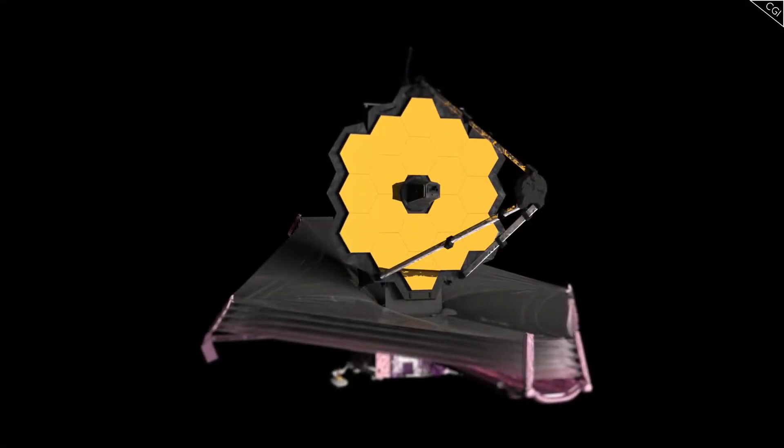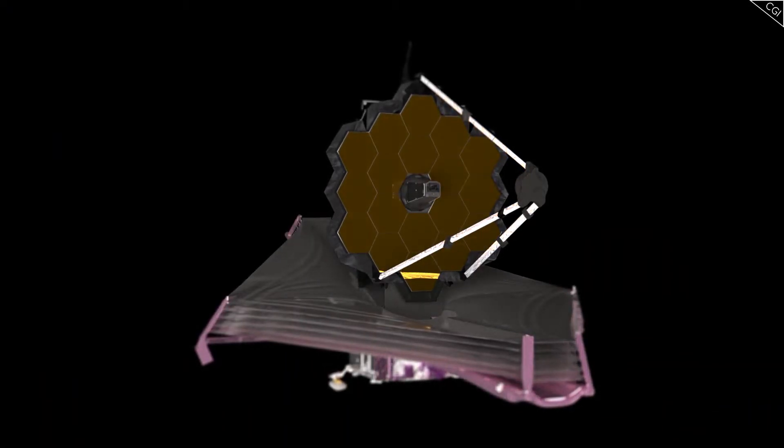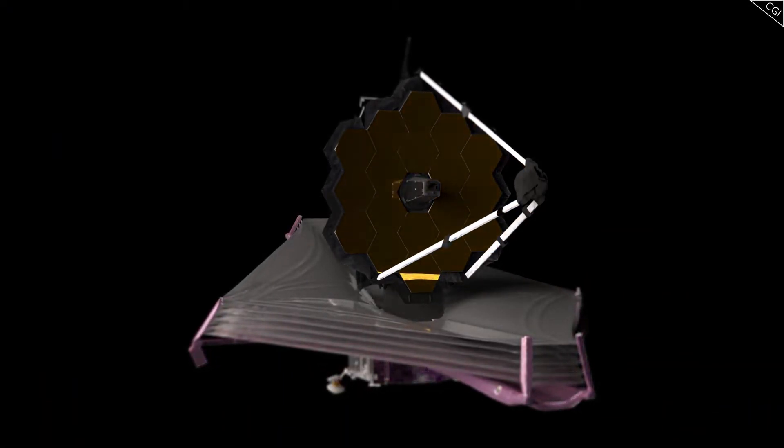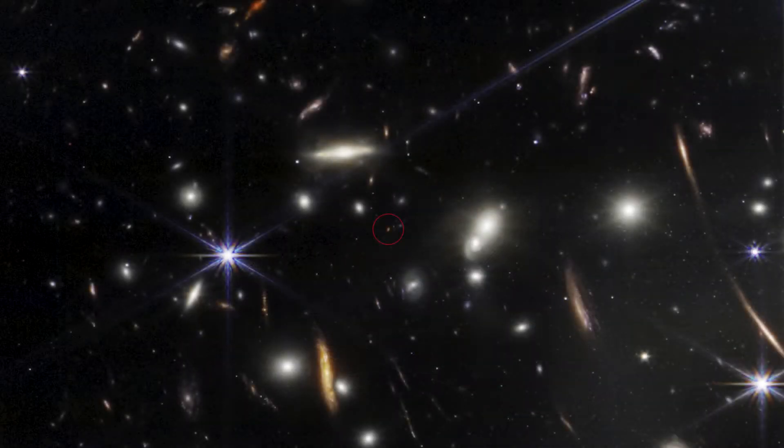What this implies is that if James Webb was able to take such a detailed image in 1/20th of the time, imagine how detailed an image it could take if it was given a comparable amount of time. In other words, this tiny little dot is likely not the best that James Webb can do.